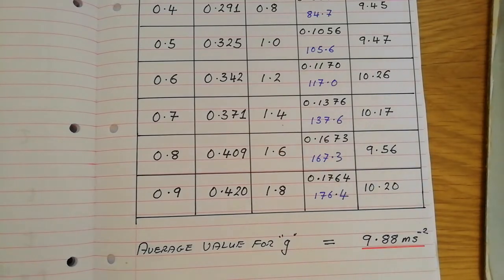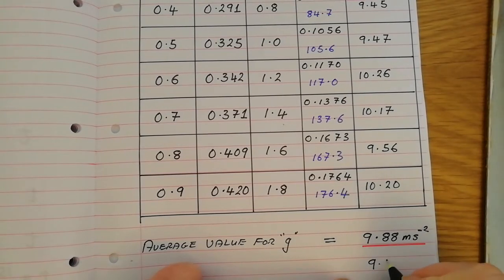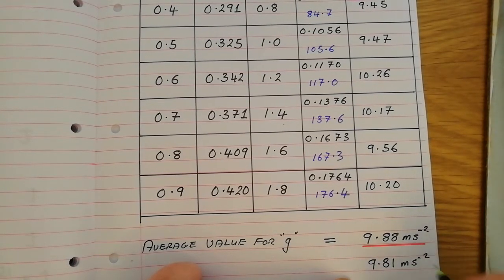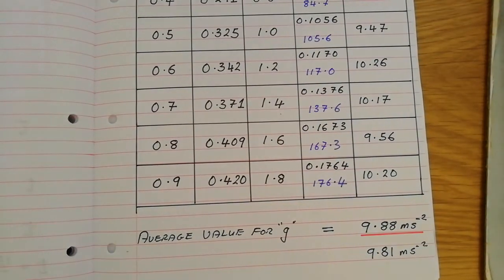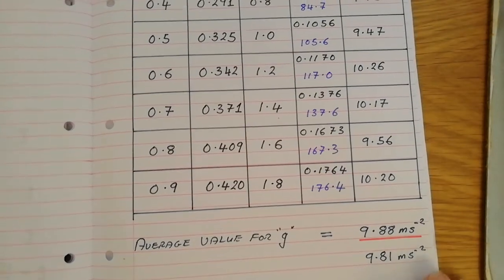What I got was an average value for g the acceleration due to gravity of 9.88 meters per second per second. And I think that really is in very good agreement with the standard accepted value on the Earth's surface of 9.81 meters per second to the minus 2. So the error between those two is very, very, very, very small. And at different points of the Earth's surface, you can get a slightly different value, depending on how far you are away from the center of gravity of the Earth, a slightly different value for g. So that's the first thing I would do.